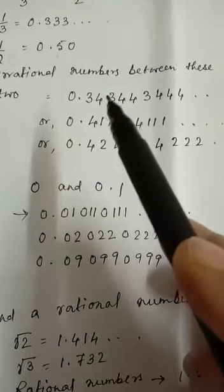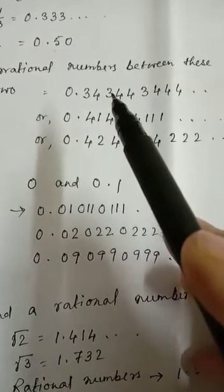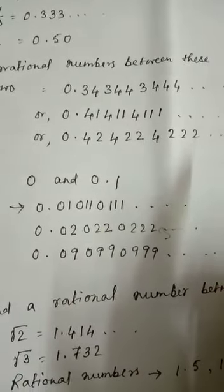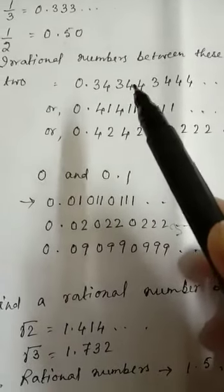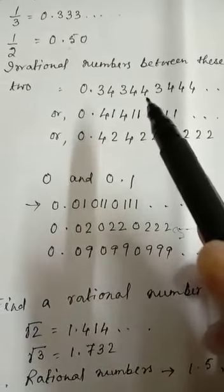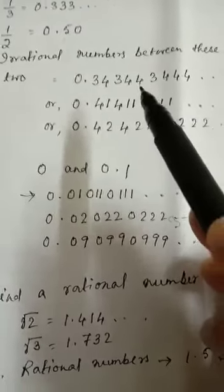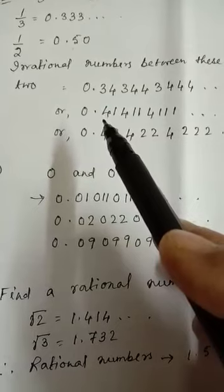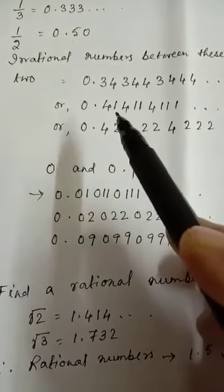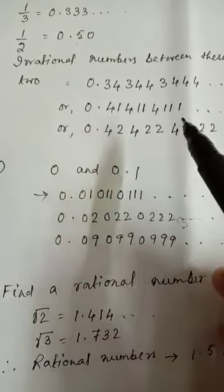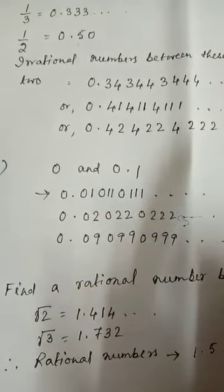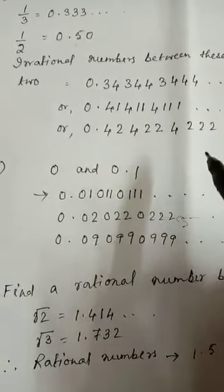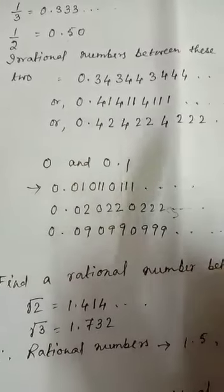So first 3, then 1, 4 — then again the same number repeating — then 2, 4, then 3, 4, like this. It will continue. You can write a number this way. Any number of irrational numbers can be placed between the given two numbers. Or you can take the number as 0.41411411 4111, like this — it will also continue. Because you have to find a number between 0.3 and 0.5, you can take any number of numbers this way.